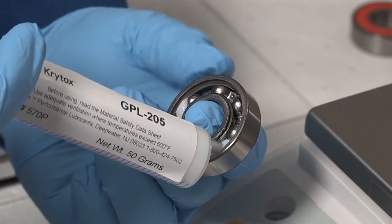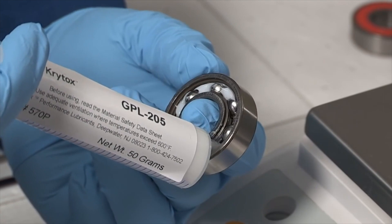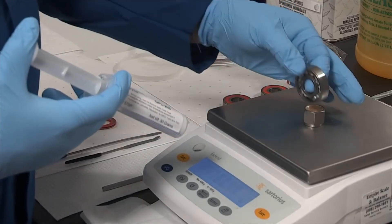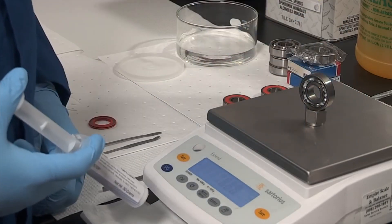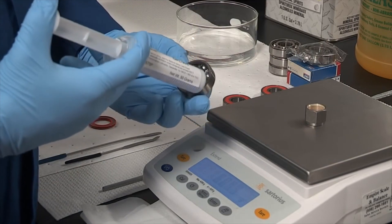Then inject grease onto the outer race between the rolling elements and repeat on the other side of the bearing. When completed, rotate the bearing slowly by hand to spread and distribute the lubricant. Apply enough thrust by hand to cause the rolling elements to rotate. Weigh the bearing again to ensure the proper weight.